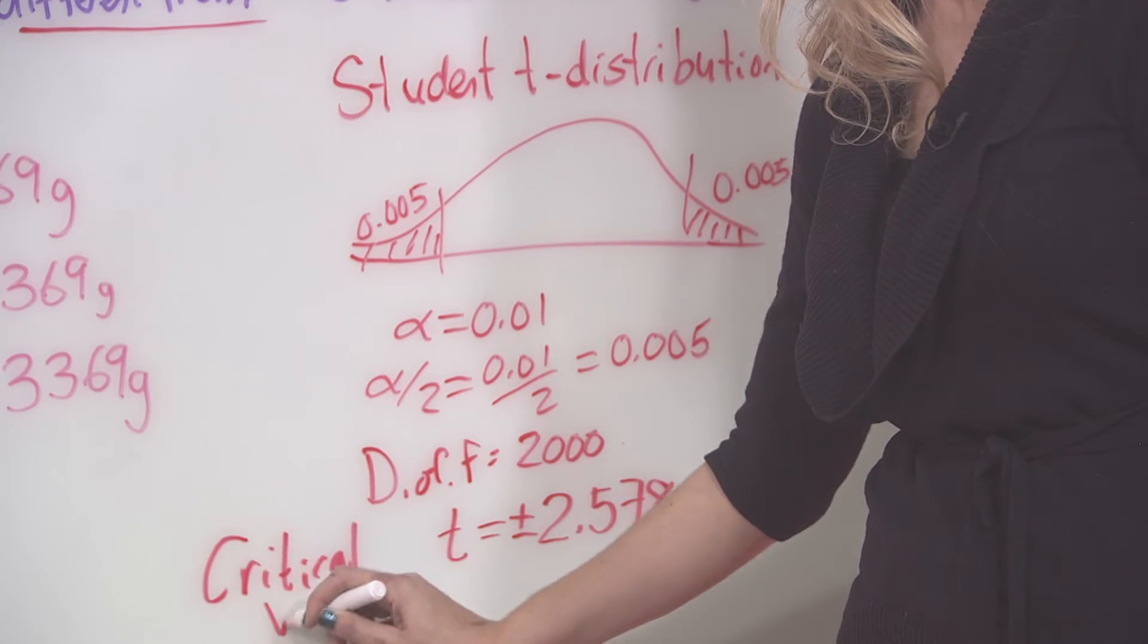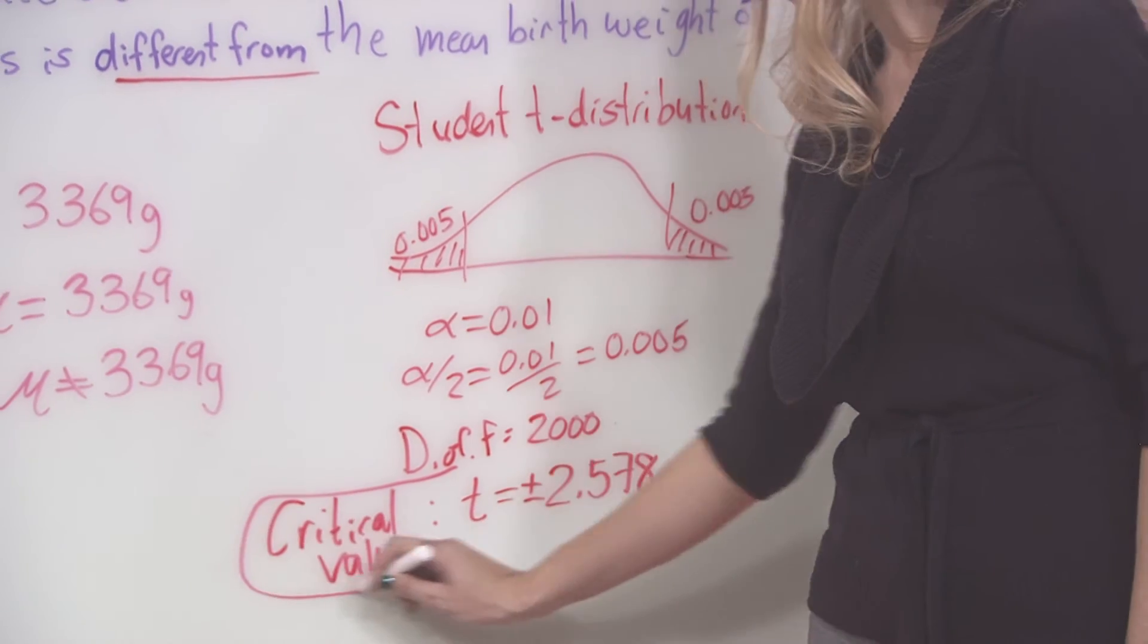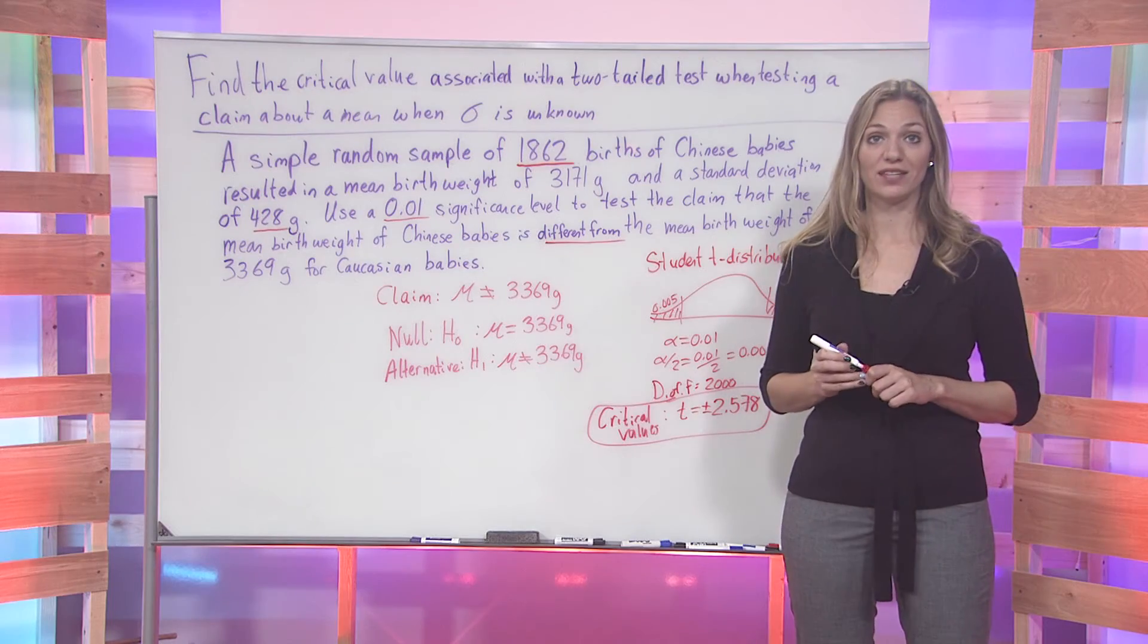So that means for us, our critical values, we have two of them now, are going to be that t is equal to plus or minus 2.578.